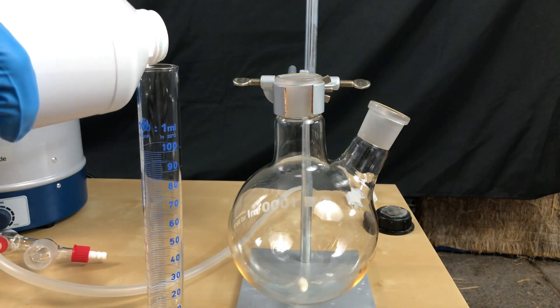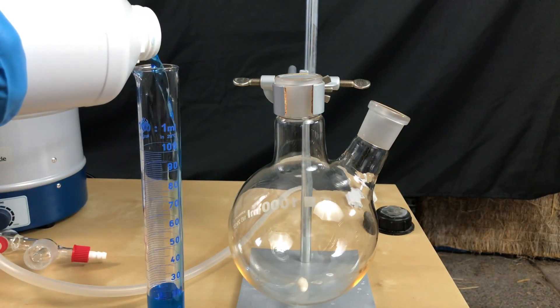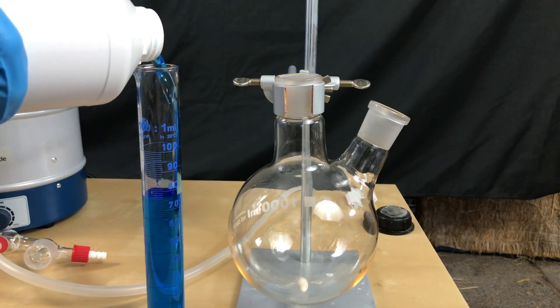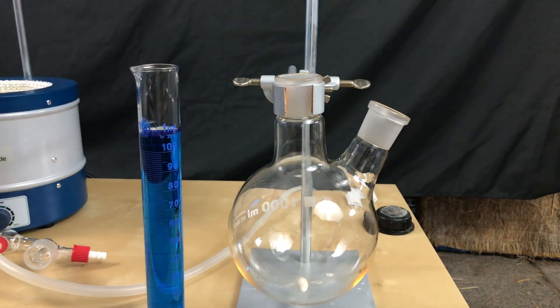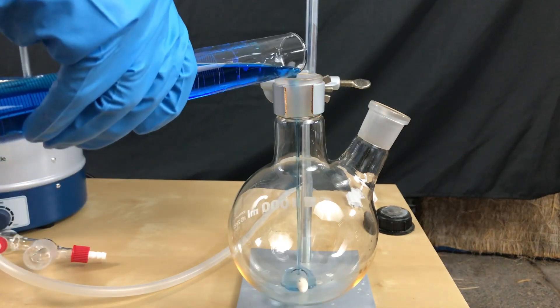We start off by measuring out 650 milliliters of our ethylene glycol. The ethylene glycol is poured into a two neck round bottom flask.